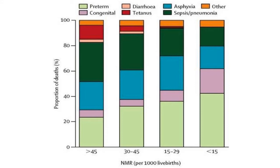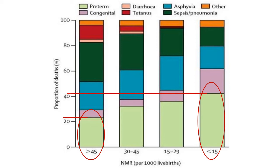In areas with high neonatal mortality rates like ours, the proportion of deaths due to prematurity is relatively lower compared to Western countries. This is because in our setting we struggle with other causes of neonatal death such as asphyxia, neonatal tetanus, diarrhea, and sepsis. In Western societies these have been largely addressed, so prematurity contributes a greater proportion of neonatal mortality there.